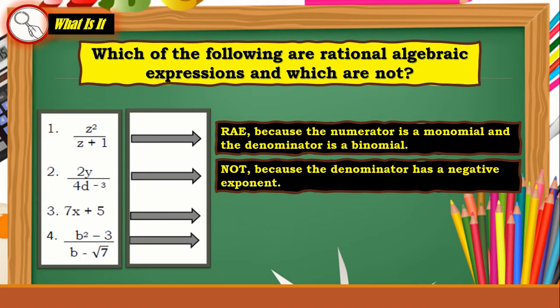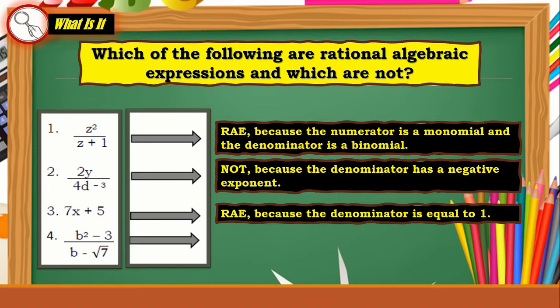What about number three: 7x + 5? It is a rational algebraic expression because the denominator is equal to 1. You might ask: where is the denominator? Just as with whole numbers — if a whole number does not have a written denominator, it automatically has a denominator of 1. The same goes for rational algebraic expressions: if there is no denominator shown, it automatically equals 1.